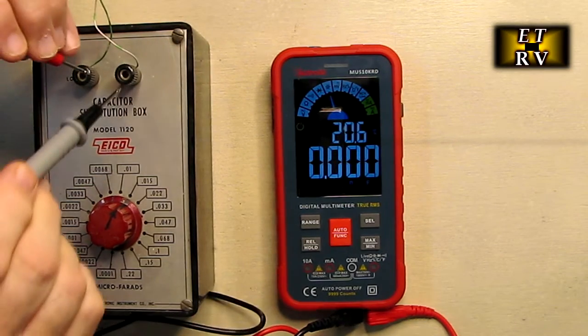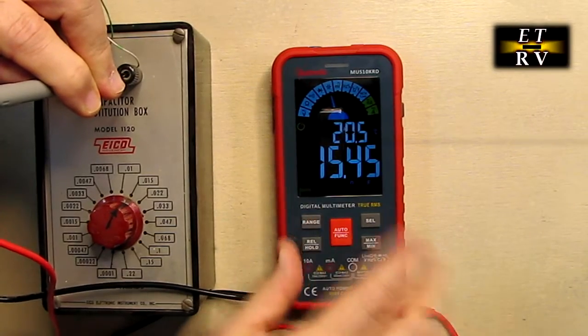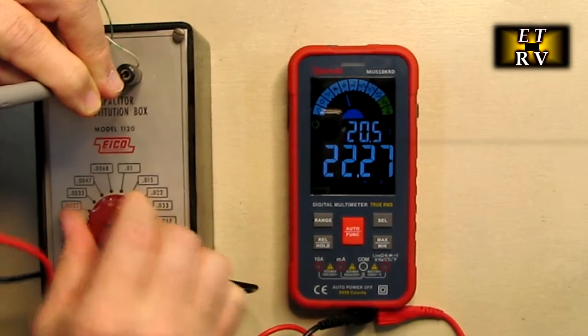And I can put this across this capacitor box right here. And it's telling me 15.45 nanofarads. Of course, I could change this and I can get different values.